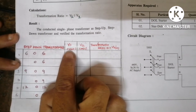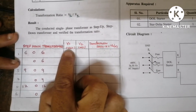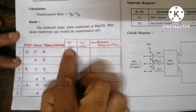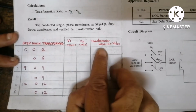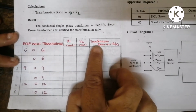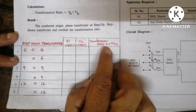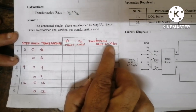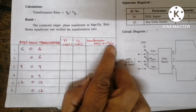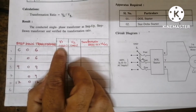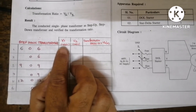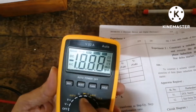V1 is the primary voltage coming from the input side and V2 is the secondary voltage. We have to calculate the transformation ratio: k is equal to V2 divided by V1. Now I will explain how to take the input voltage, and for that we have to use a digital multimeter.